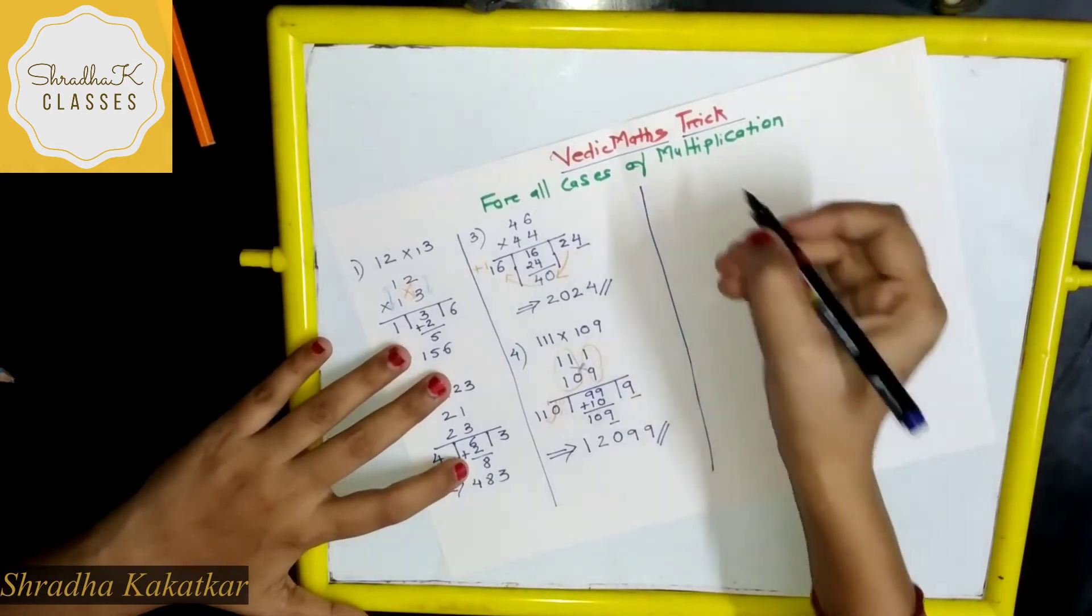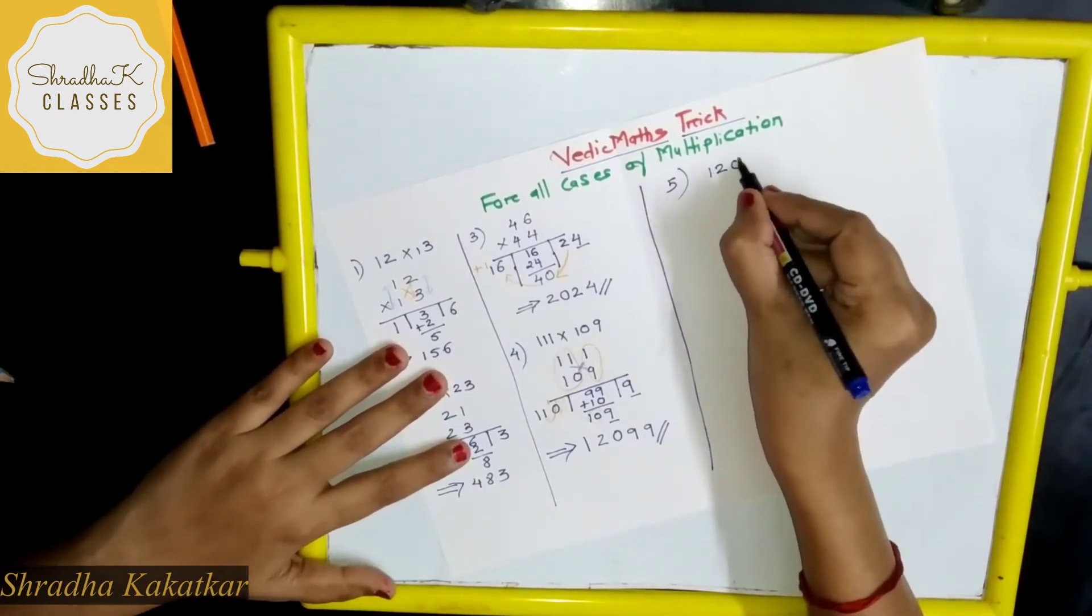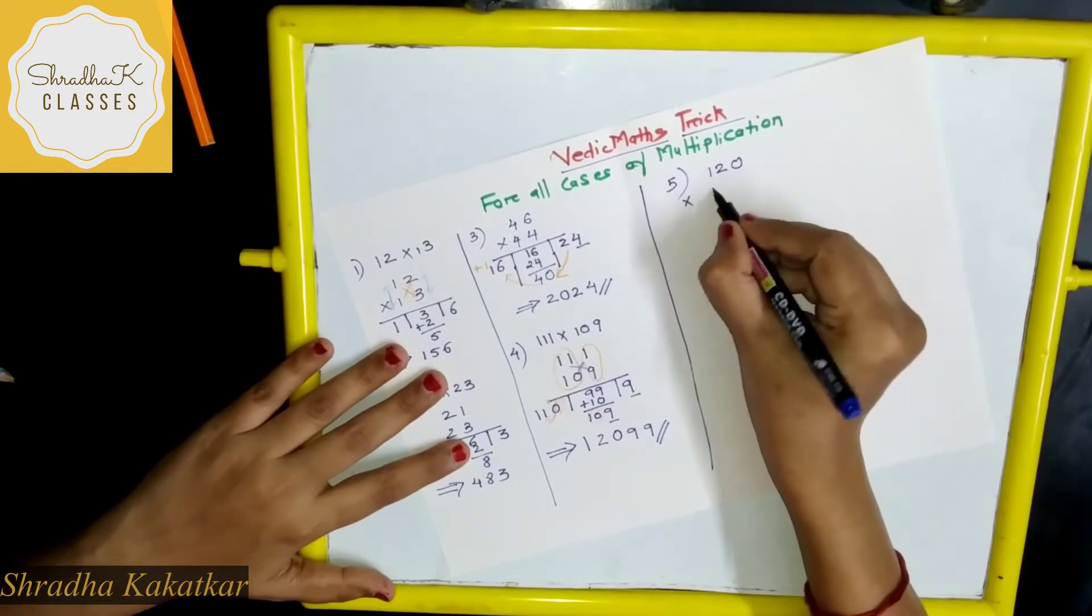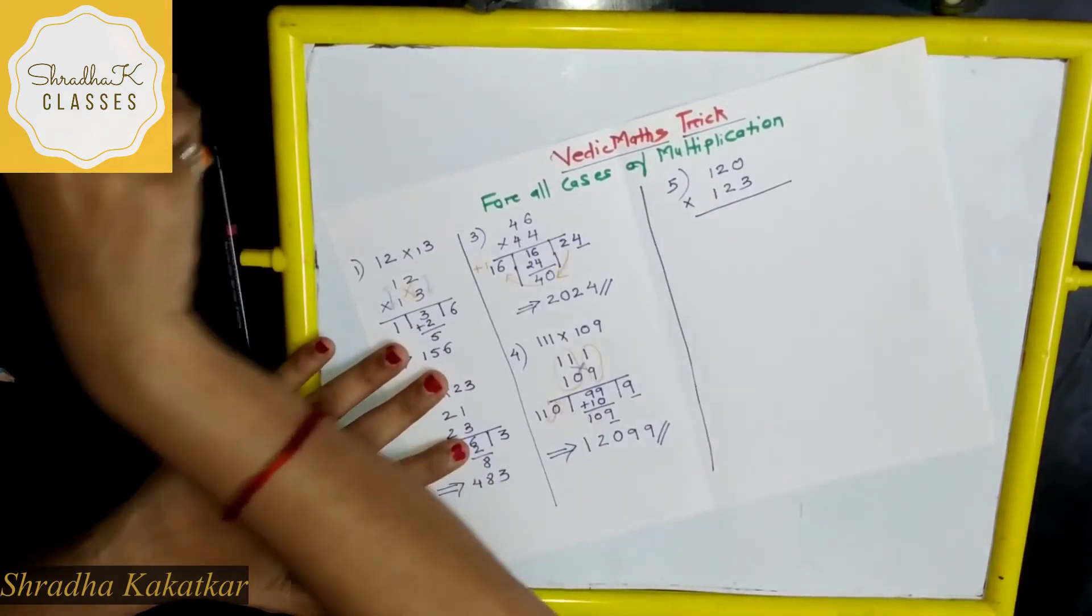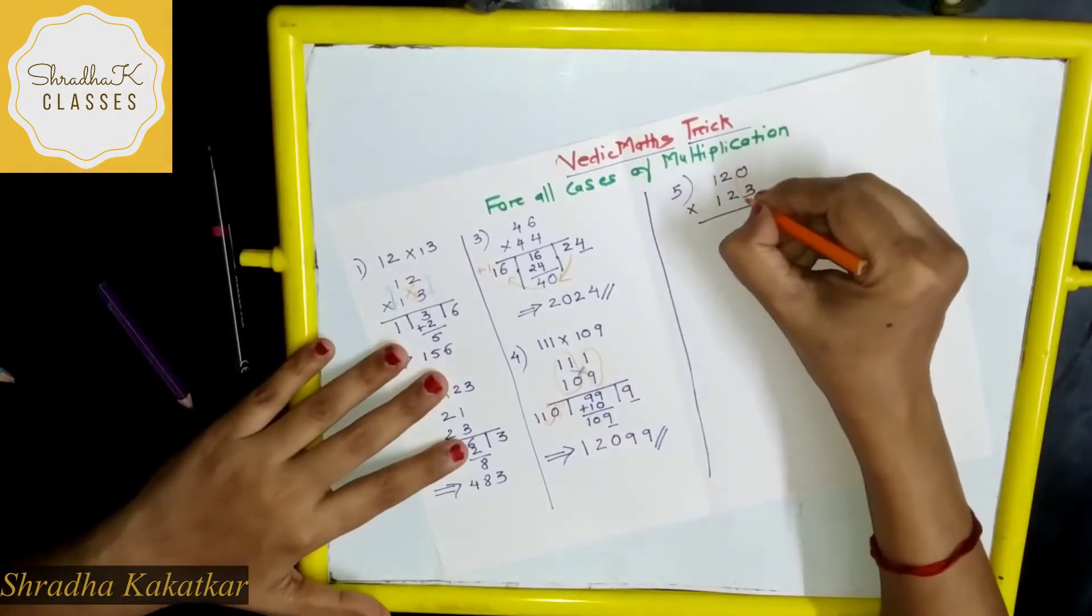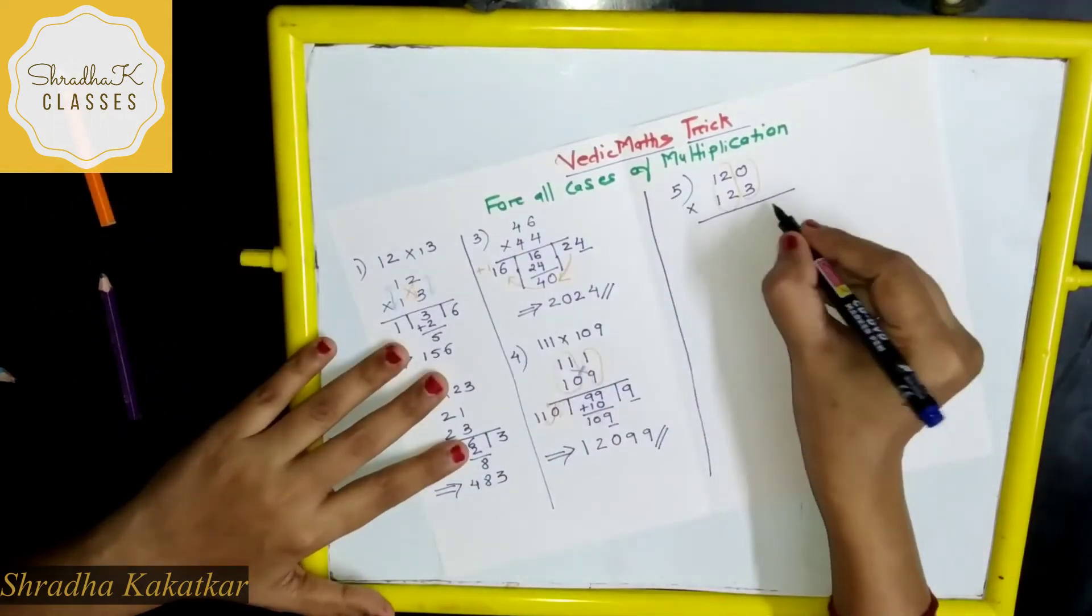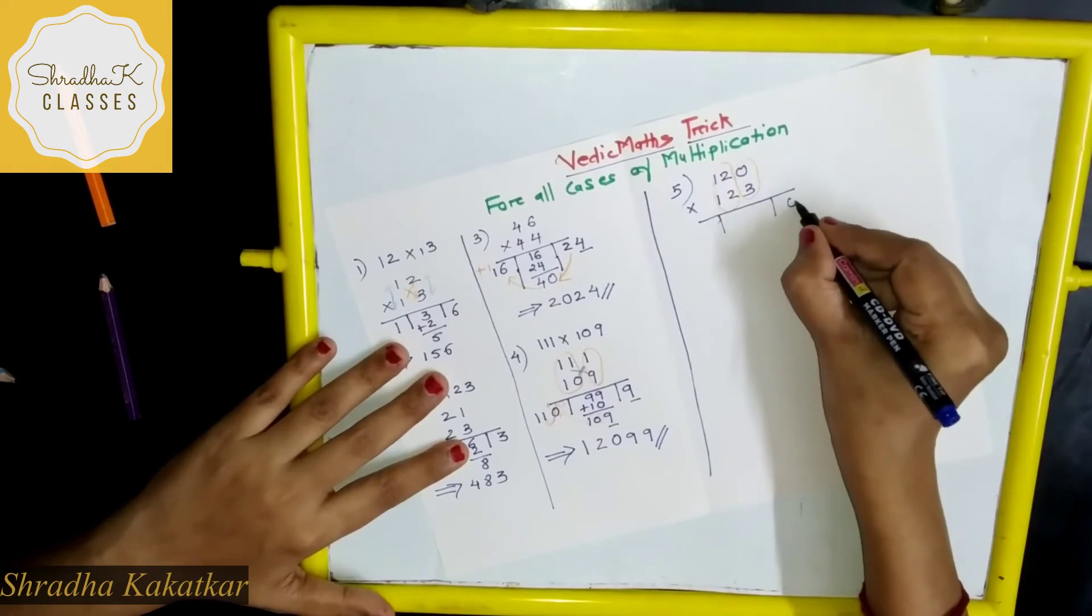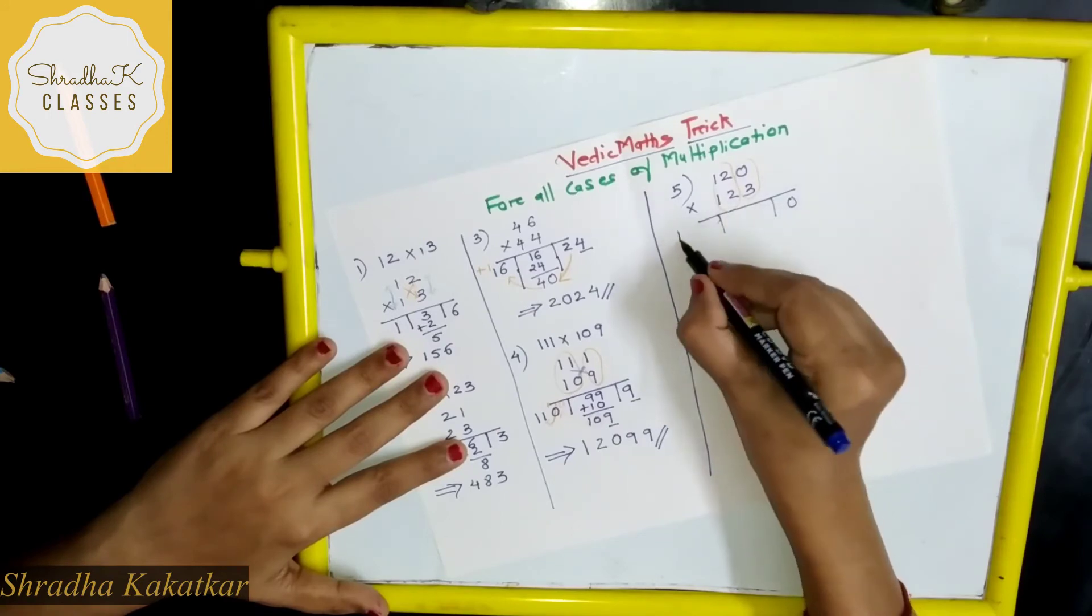Let's take one last example. 120 into 123. Again. Now what you will do? First vertically multiply. Zero. And 12 into 12, 144.